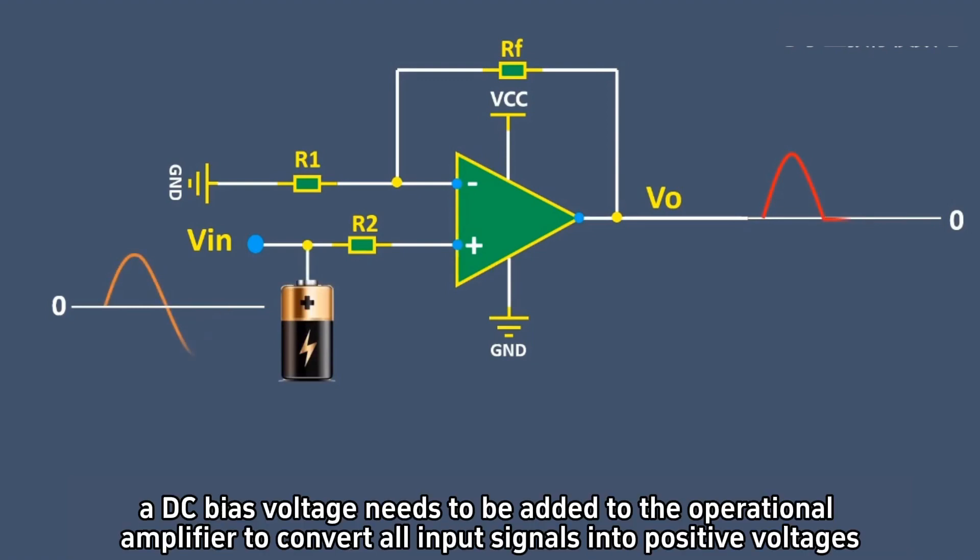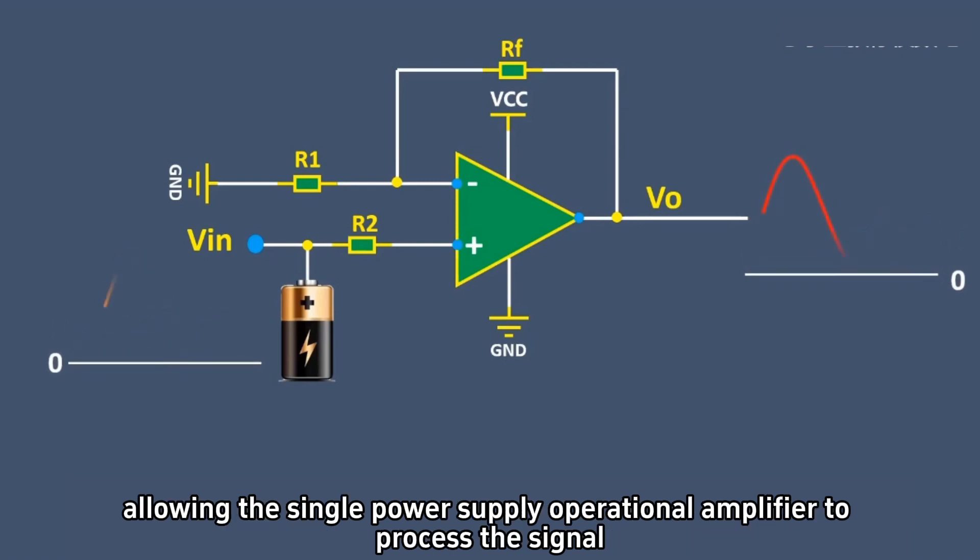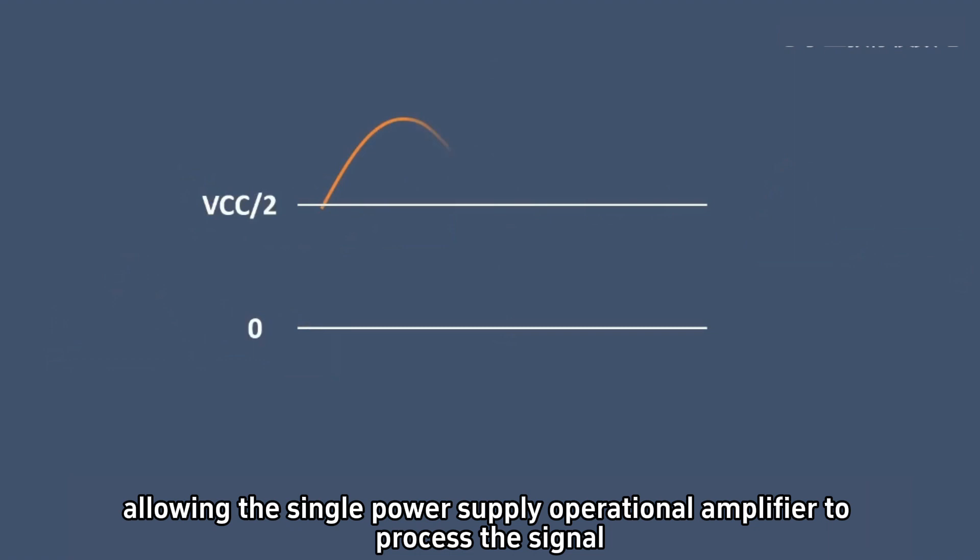In this case, a DC bias voltage needs to be added to the operational amplifier to convert all input signals into positive voltages, allowing the single power supply operational amplifier to process the signal.